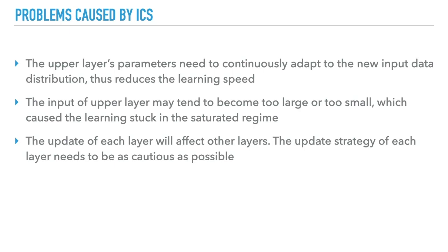So what problems will ICS bring to us? First, the upper layer's parameters need to continuously adapt to the new input data distribution, which reduces the learning speed. Second, the input of the upper layer may tend to become too large or too small, which causes the learning to get stuck in the saturated region. At last, the update of each layer will affect other layers, so the update strategy of each layer needs to become as cautious as possible.